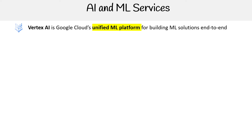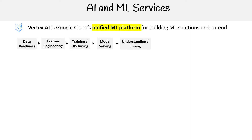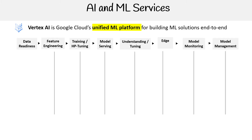Let's define what an ML pipeline looks like. We have data readiness, feature engineering, training, hyperparameter tuning, model serving, understanding edge — that would be like deploying to the edge, like on mobile devices — model monitoring, and model management.